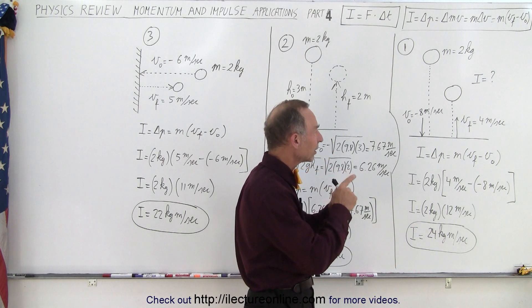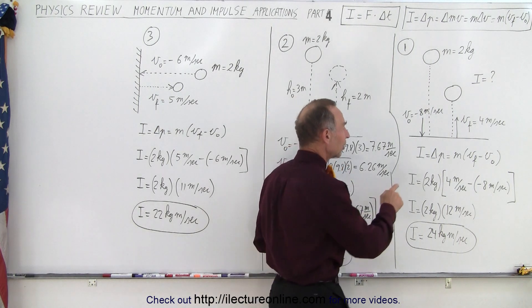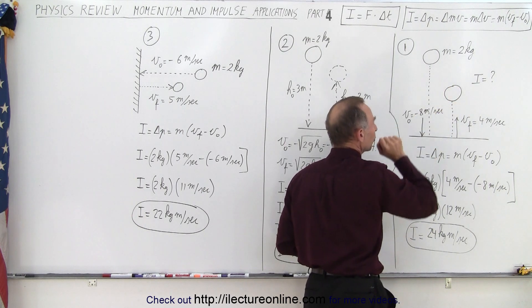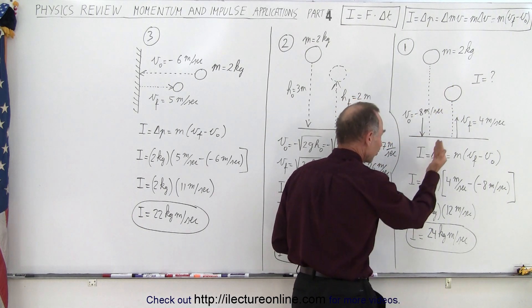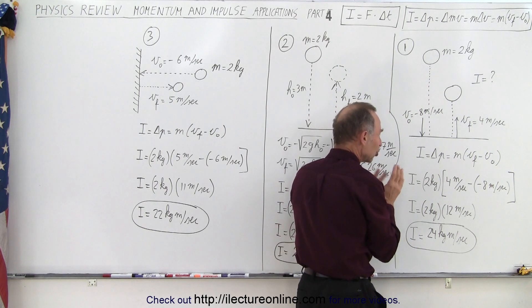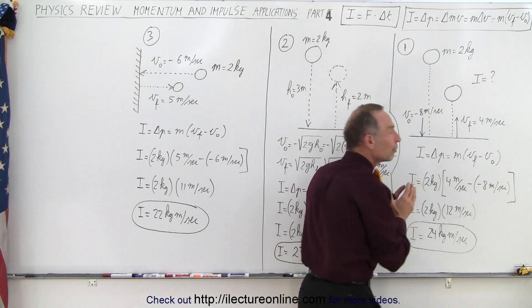But we can calculate the impulse because the impulse is the change in momentum, and the change in momentum for the ball. So what we're assuming now is that there's a force acting against the ball as it collides with the floor, and so that changes the momentum of the ball.